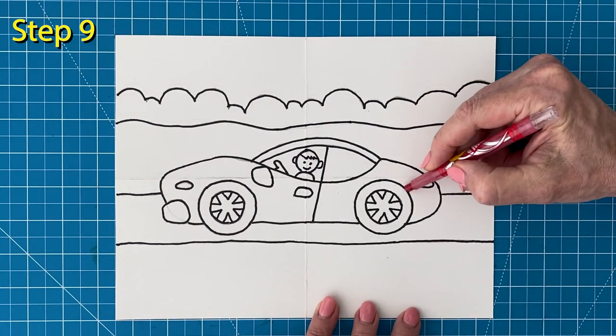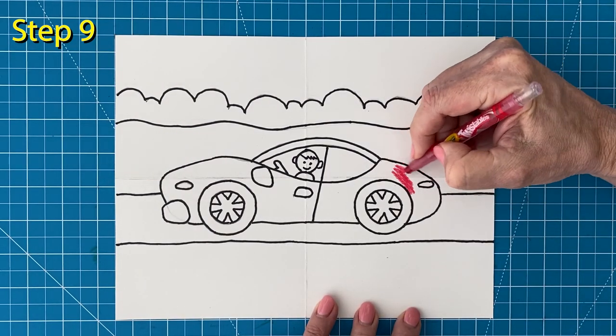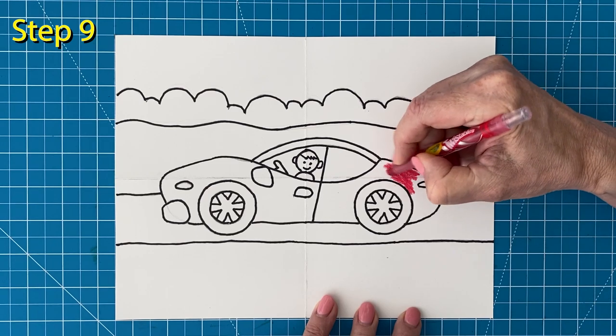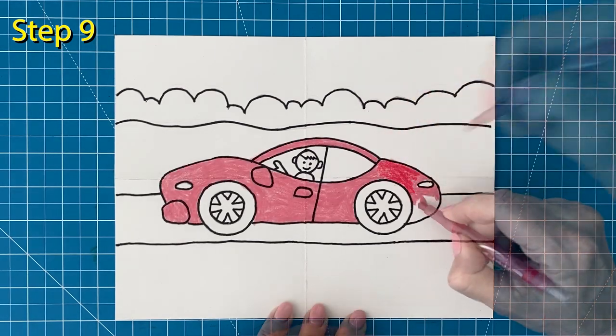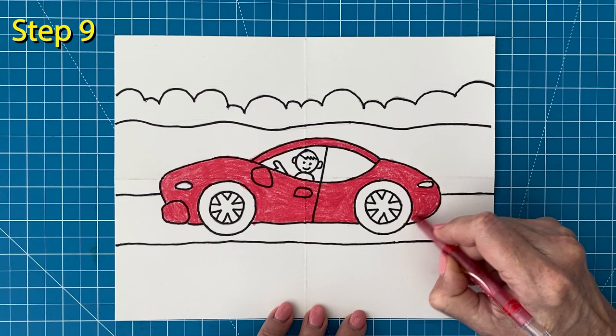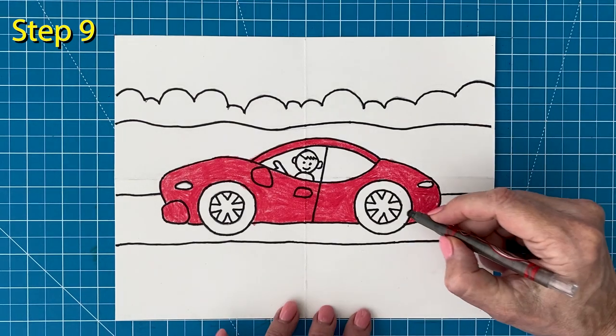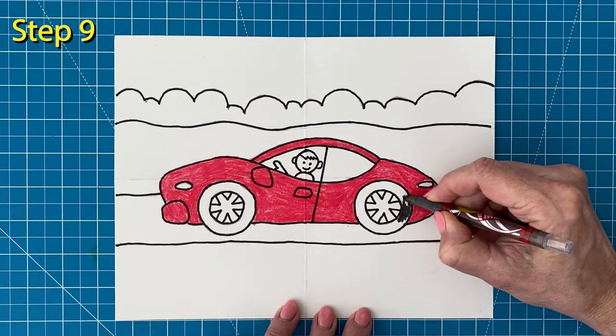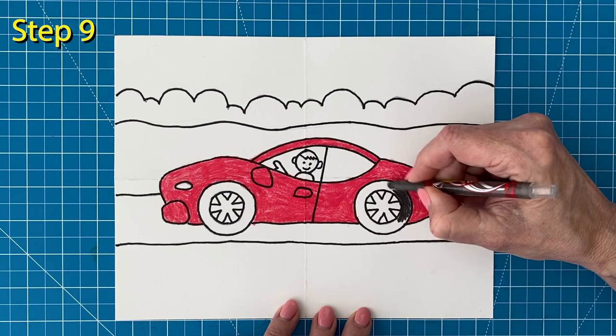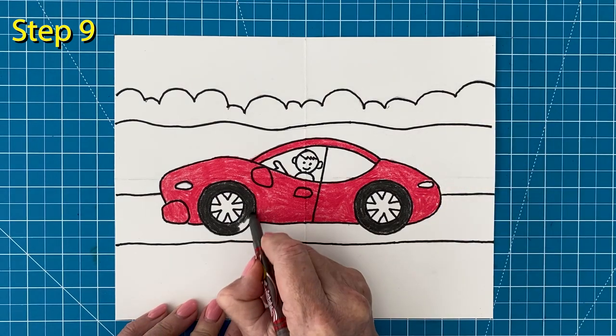Now it's time to color. I'm making this a red sports car. And I'm going to press really hard so that red is as bright as it can be. The wheels are going to be black, of course. Pressing hard here, too, will also make your color really dark.